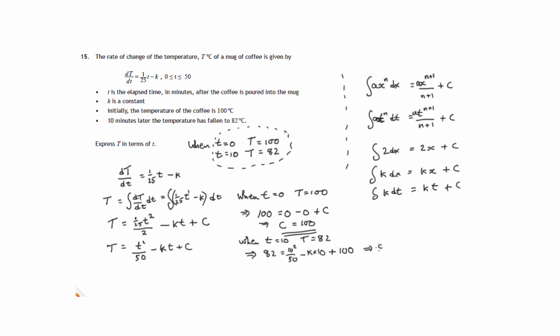So we have 82 equals, now 10 squared is 100, 100 over 50 is 2, minus 10k plus 100. So let's add 10k to both sides and we'll get 10k here. We've got 102 on the right hand side and let's take away 82 from both sides. So we end up with 10k being equal to 20. So therefore, k equals 2.